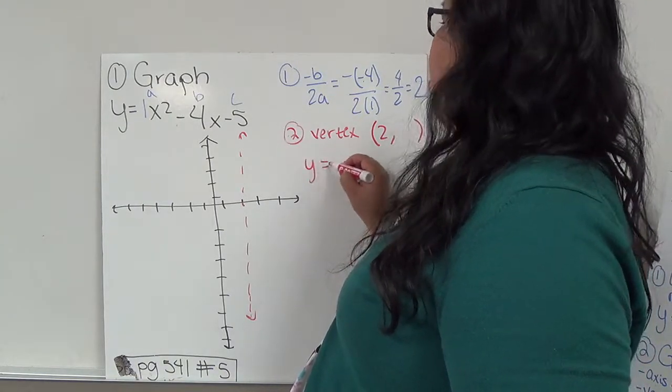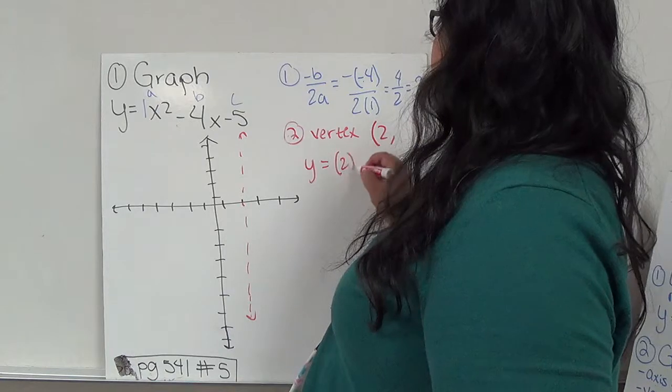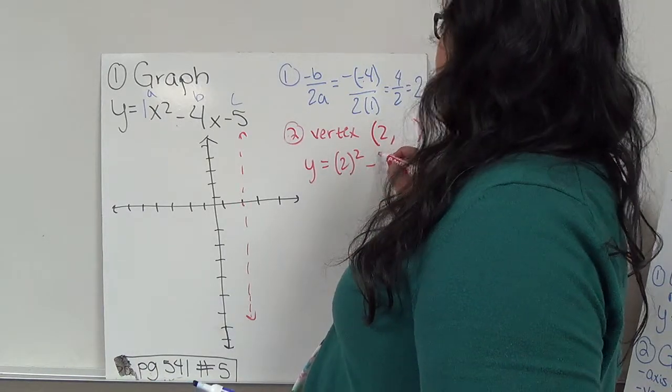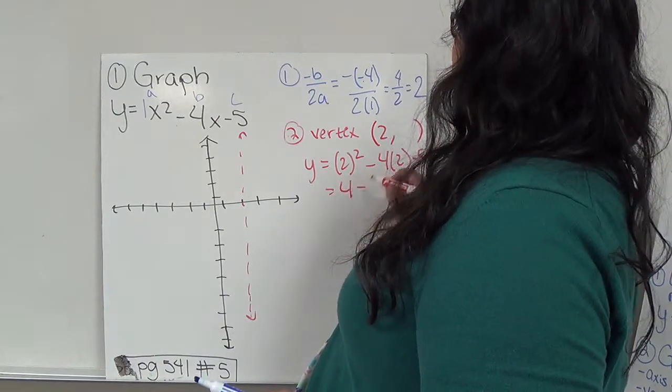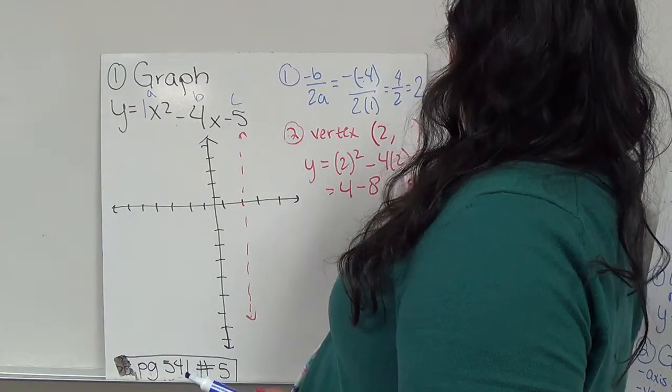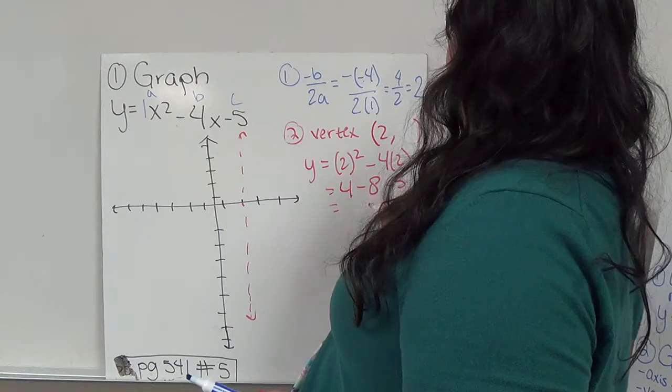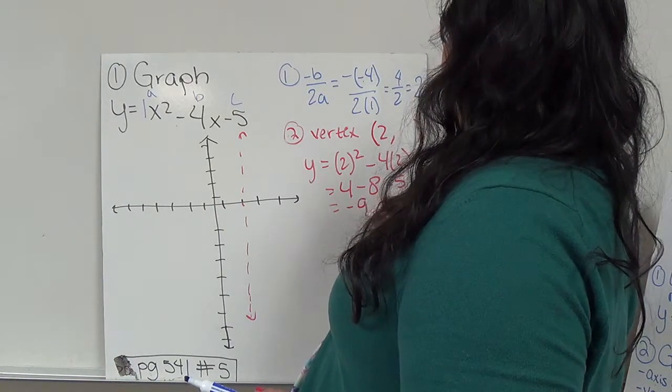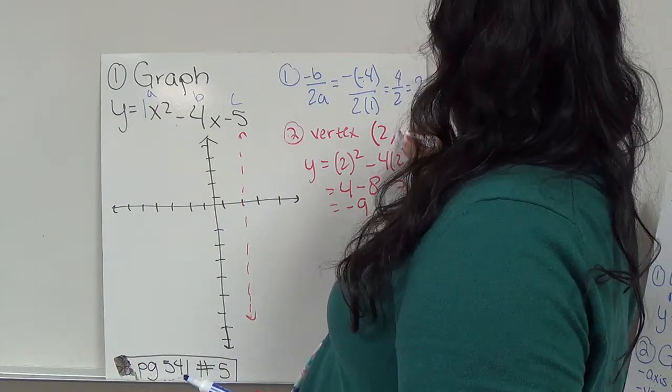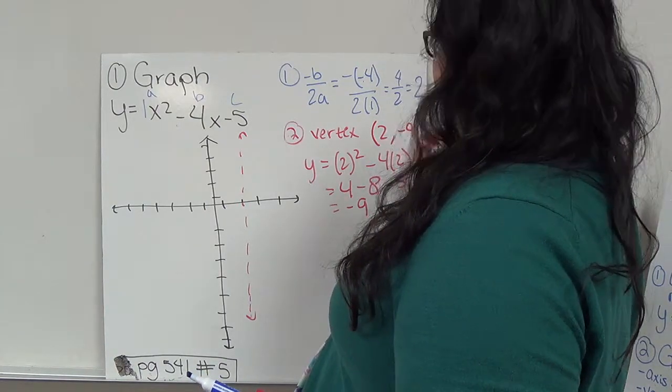So Y equals 2 squared minus 4 times 2 minus 5. So 2 squared is 4, 4 times 2 is 8 minus 5. 4 minus 8 is negative 4, minus 5 is negative 9. So this is 2 comma negative 9.